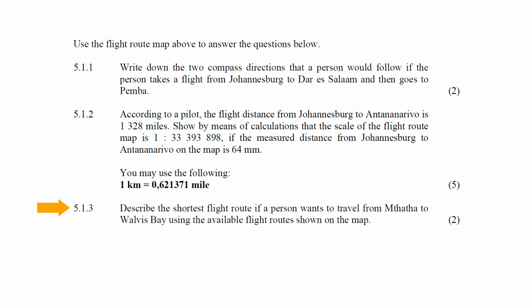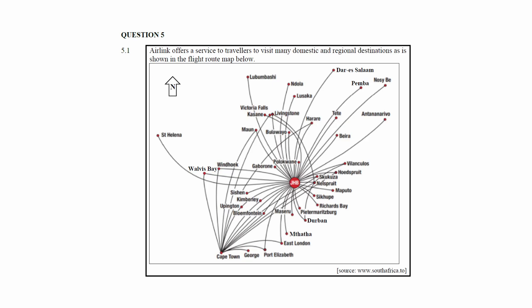In question 5.1.3, you are instructed to describe the shortest flight route if a person wants to travel from Tata to Val Fispe using the available flight routes shown on the map. From the flight route map, the shortest flight route is to take a flight to Johannesburg and then take a connecting flight to Val Fispe from there.